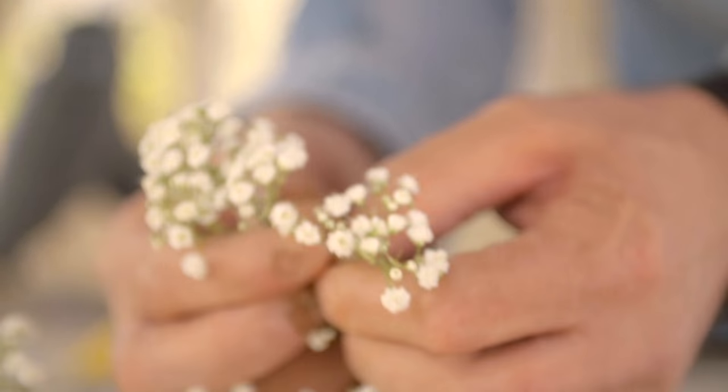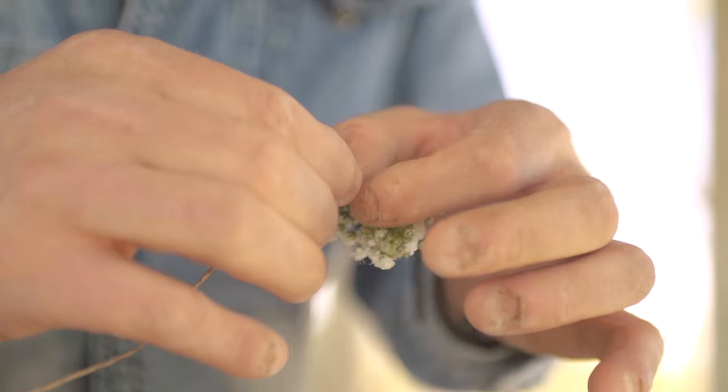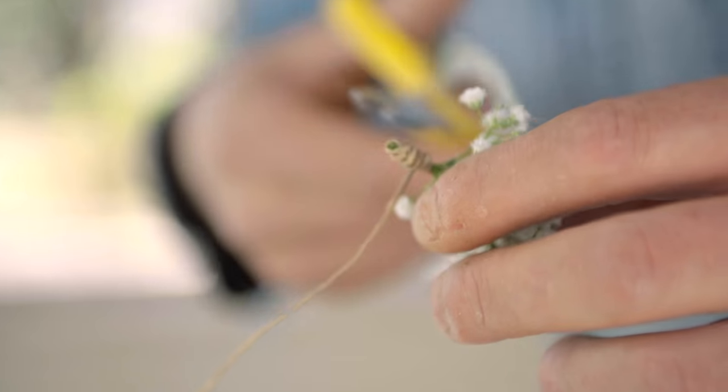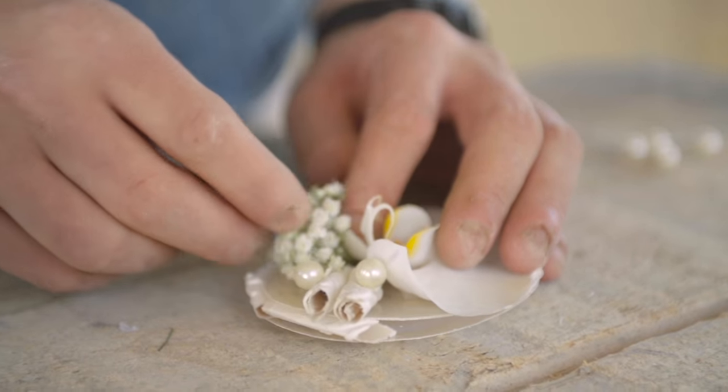Then we're going to take a small piece of phalaenopsis. I'm going to give it some wire so I can use the hot glue again. So a little bit of glue, and again, we're going under phalaenopsis, facing it like that.